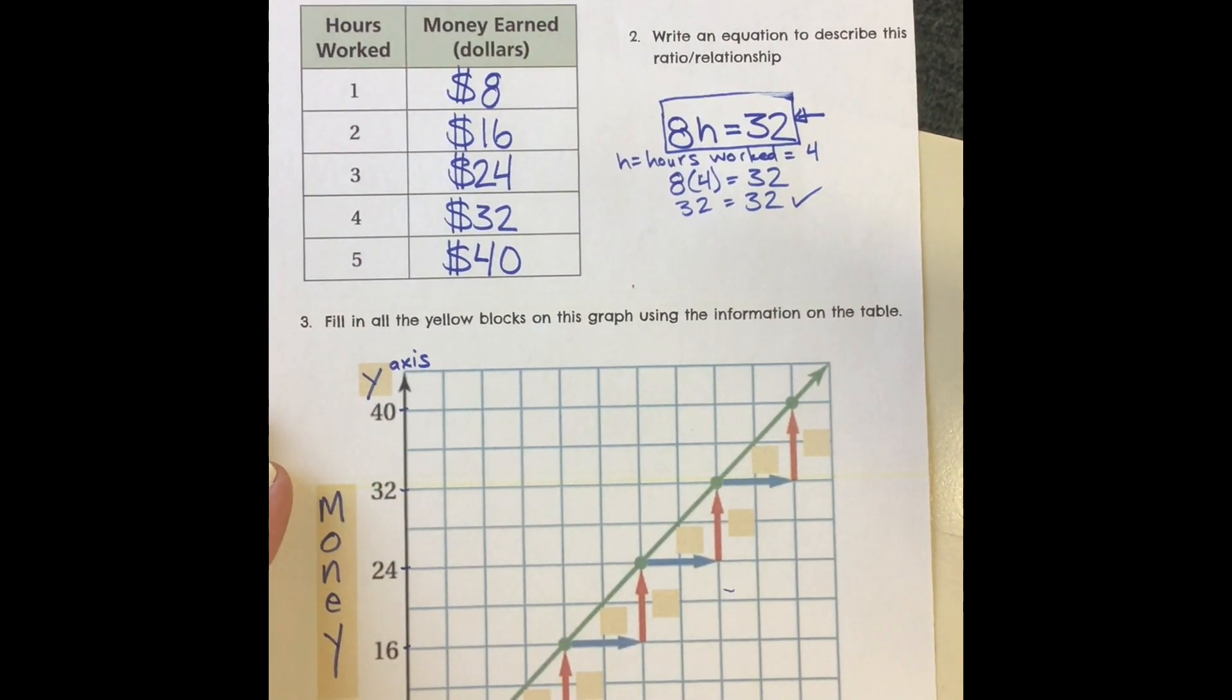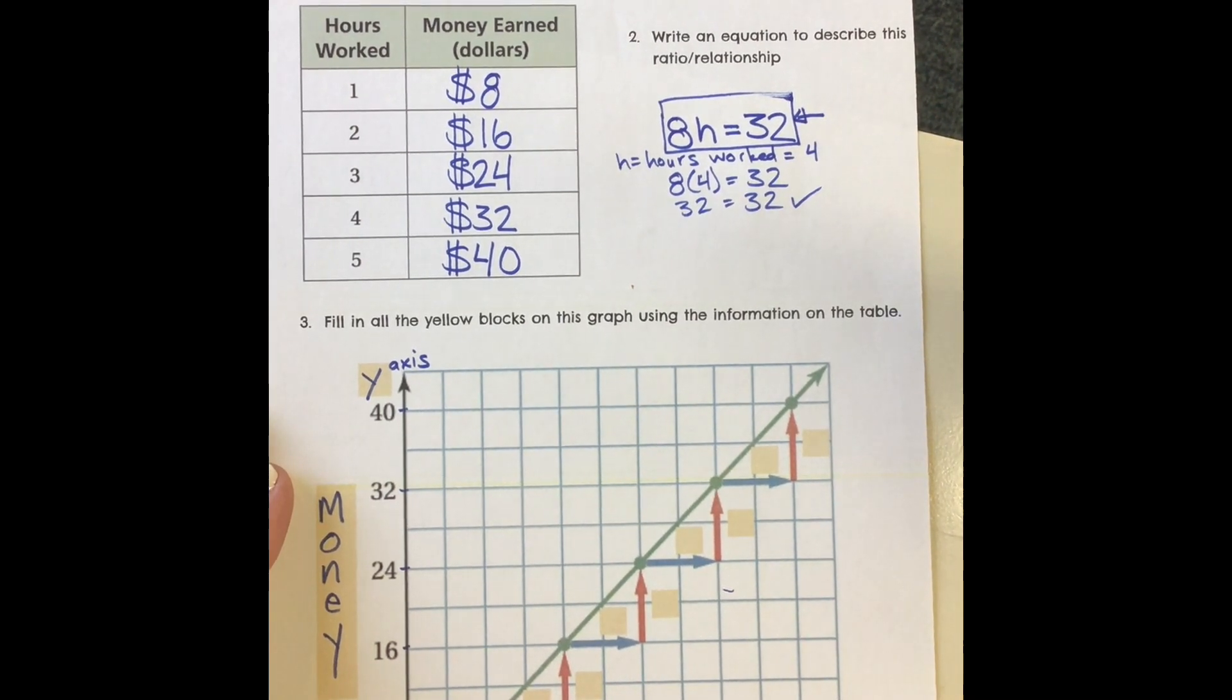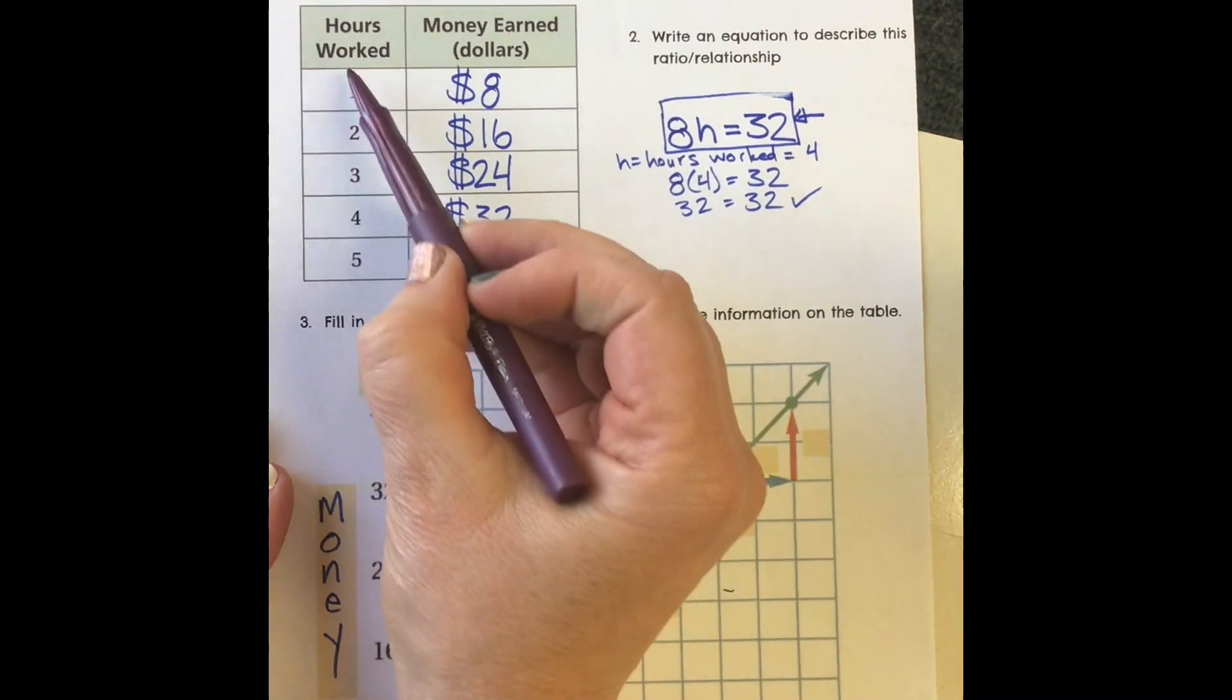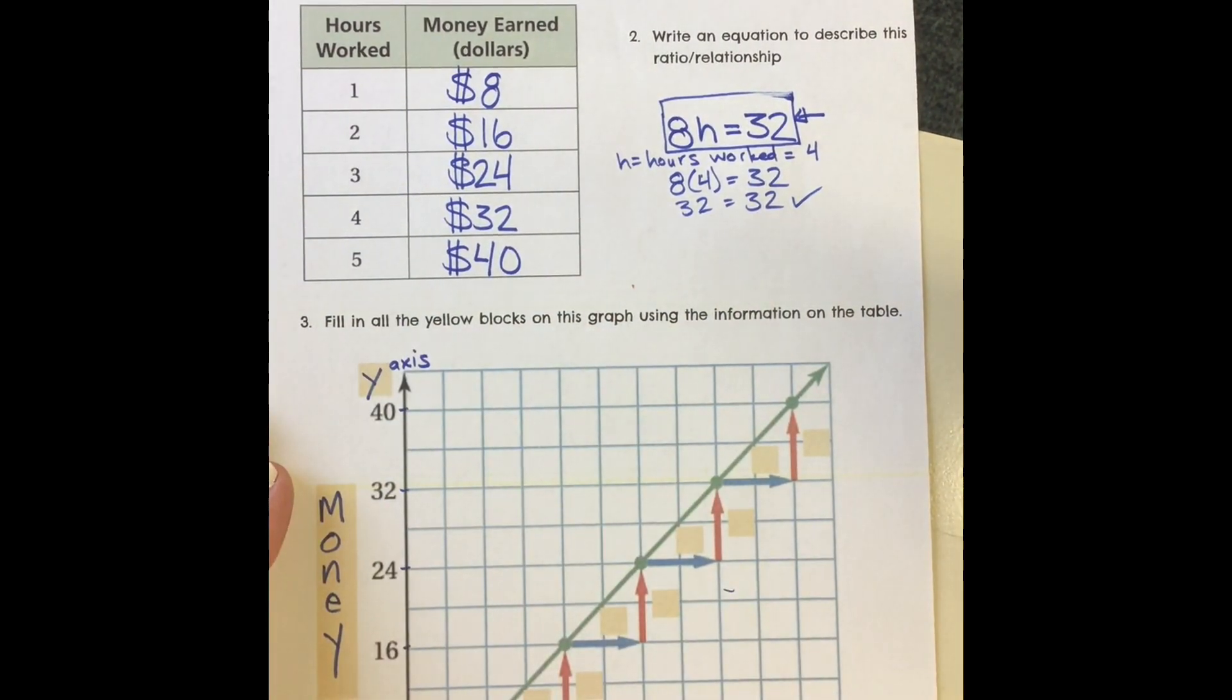And then on this side, my x-axis, what was this? It went up by 1, 2, 3, 4, 5. If I look up here, that's my hours worked. So this is the hours that I worked. I'm starting to make this graph easier to read.